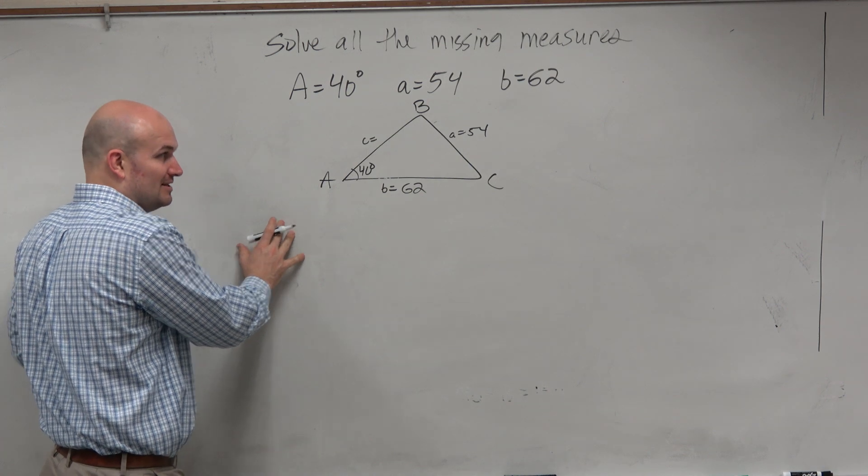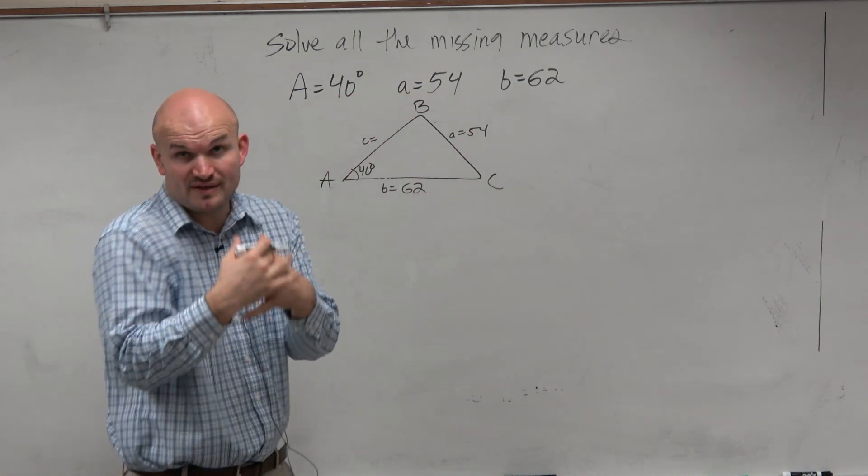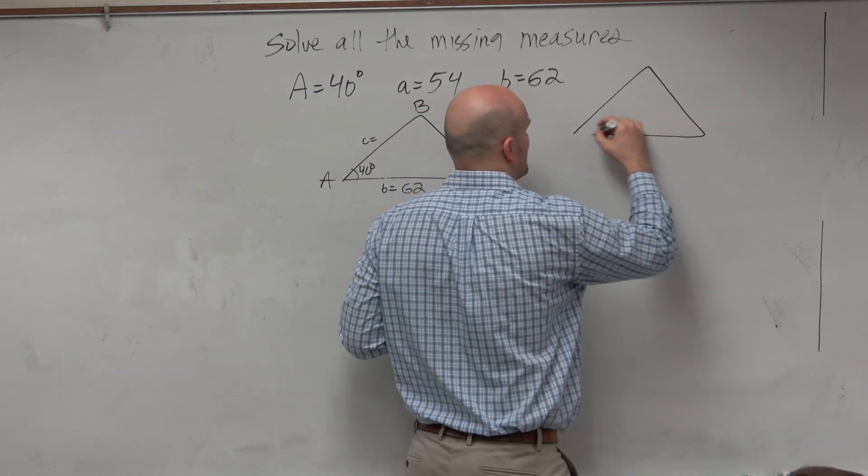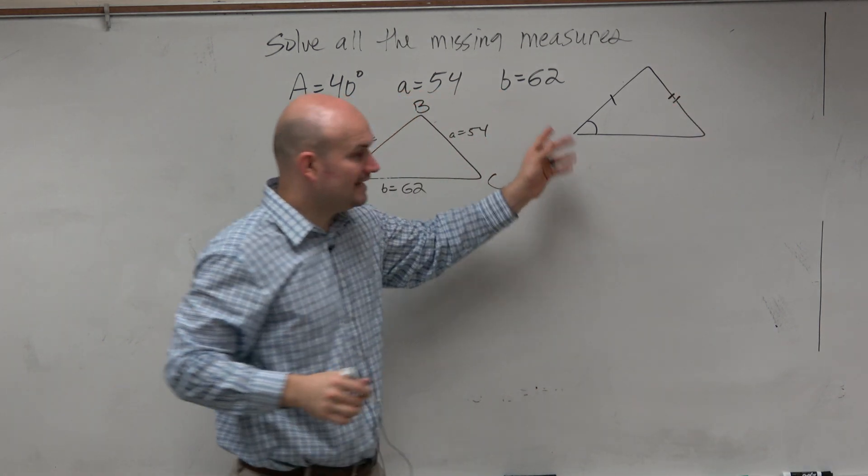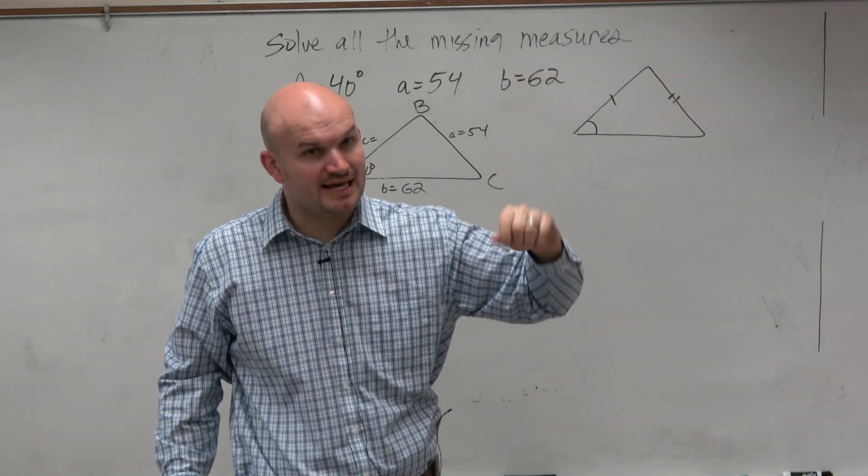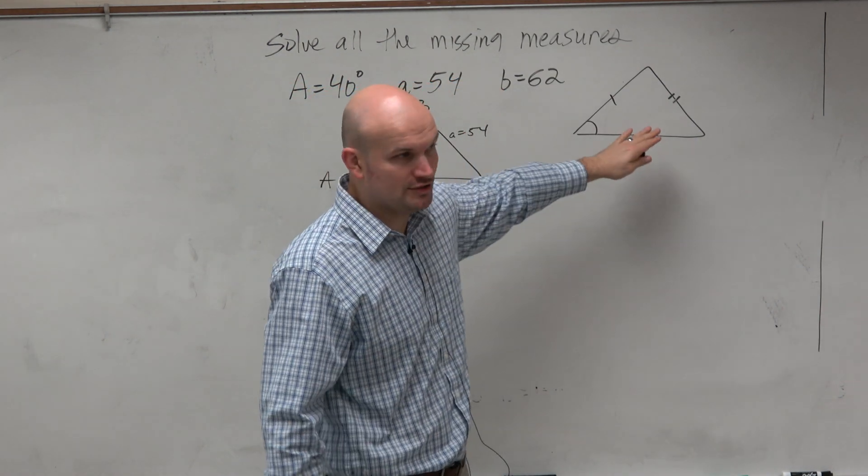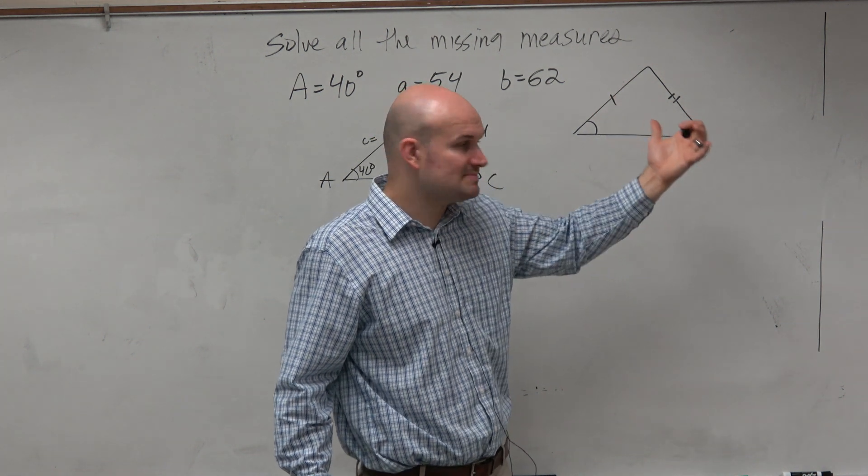One thing I did talk about in this class was when we recognize this as a side-side angle, the ambiguous case, we do want to draw a triangle so it looks like angle-side-side. Draw it so it looks like that, because my notes and our describing of this situation, all the triangles look like that.